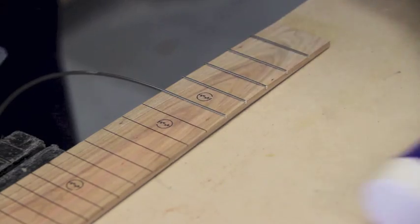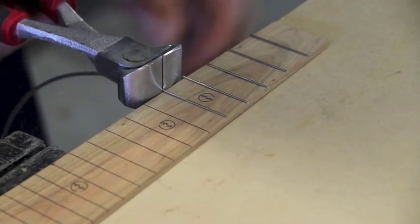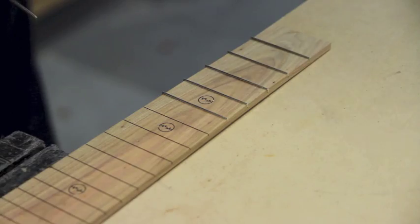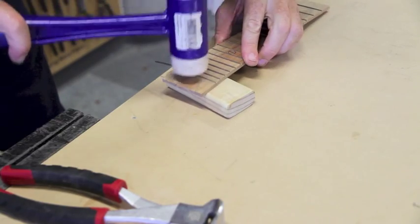Cut off that excess wire using some pincers or wire cutters, and repeat this process until all fret wire has been inserted.